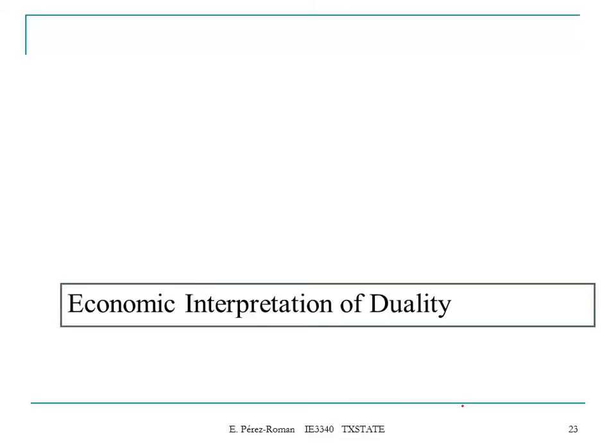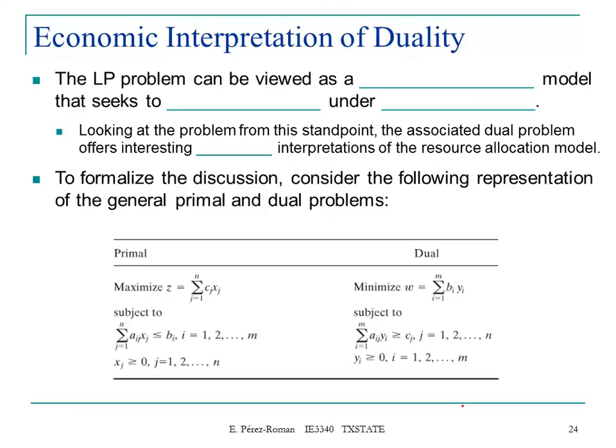Now let's talk about the economic interpretation of duality. The LP problem can be viewed as a resource allocation model that seeks to maximize revenue under limited resources. That's what we are usually doing when we are trying to solve these LP problems.